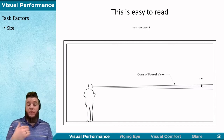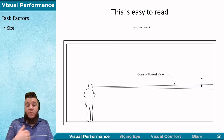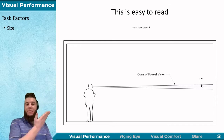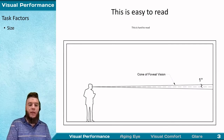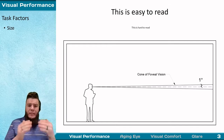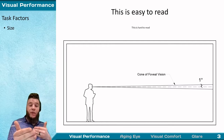Angular size is the relevant metric for the size of a visual task because of the way light radiates circularly outward. The larger text is easy to read and the tiny text is hard to read. You can get the same effect by walking across the room and trying to read the larger text. So it's not just the size of the task, but also our visual distance to the task that determines the angular size.